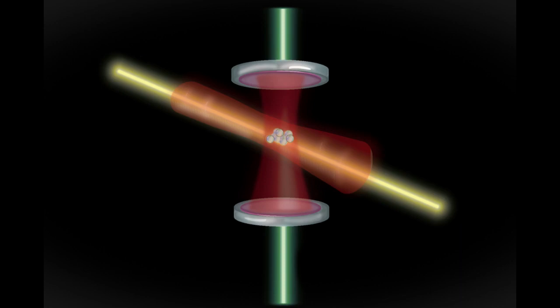The group used standard techniques to cool the atoms and trap them in an optical cavity formed by two mirrors. They then sent a laser through the optical cavity where it ping-ponged between the mirrors, interacting with the atoms thousands of times.